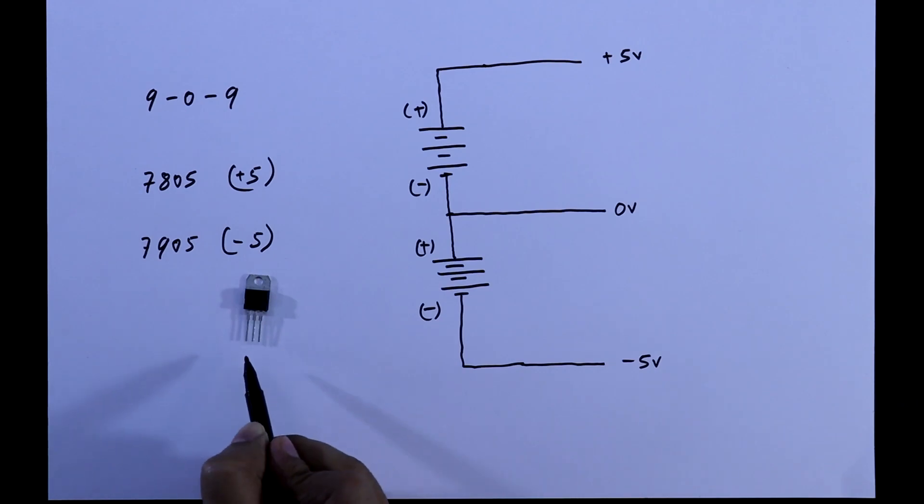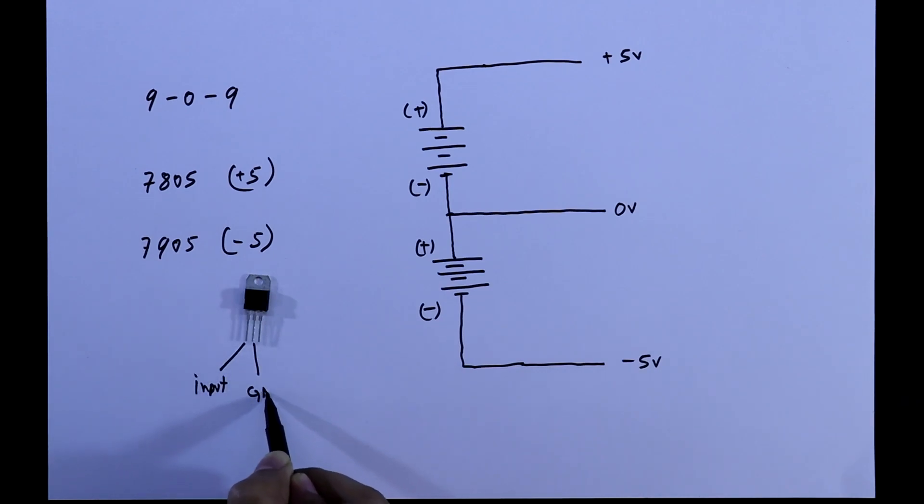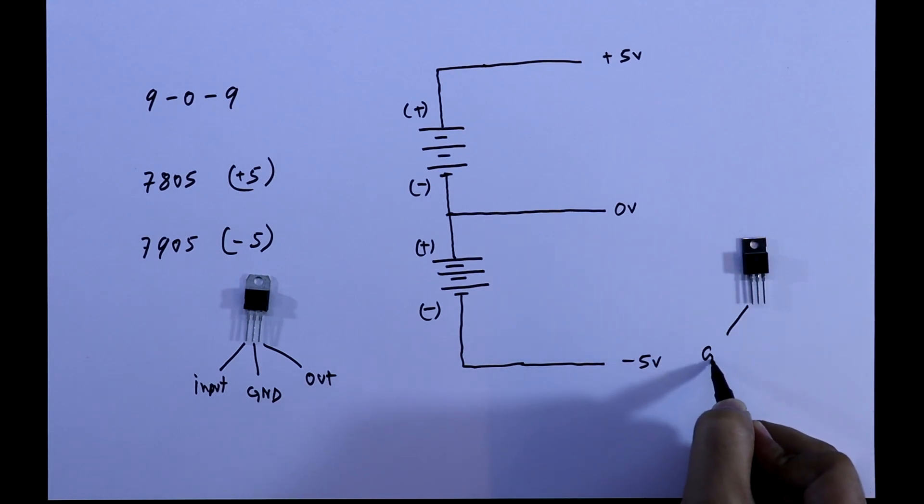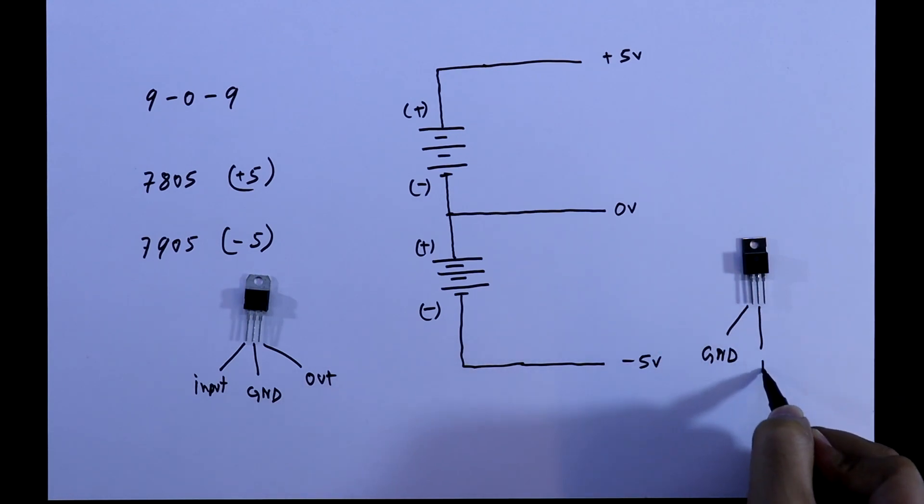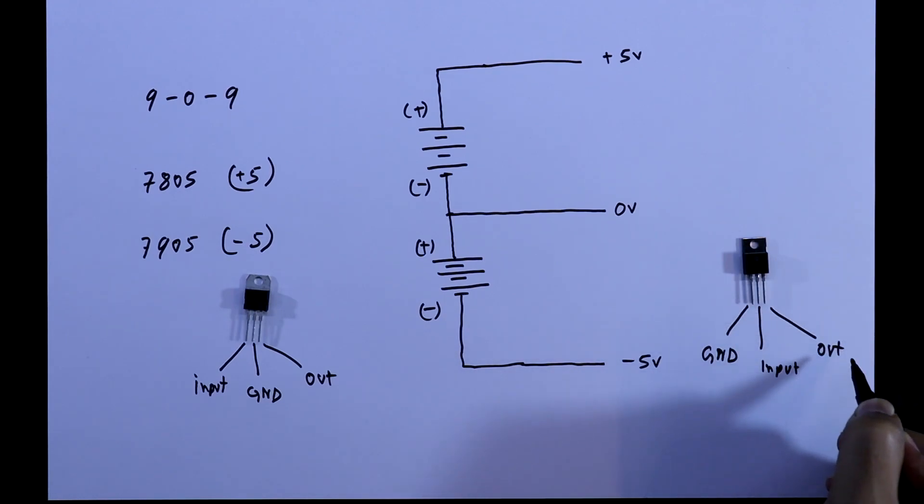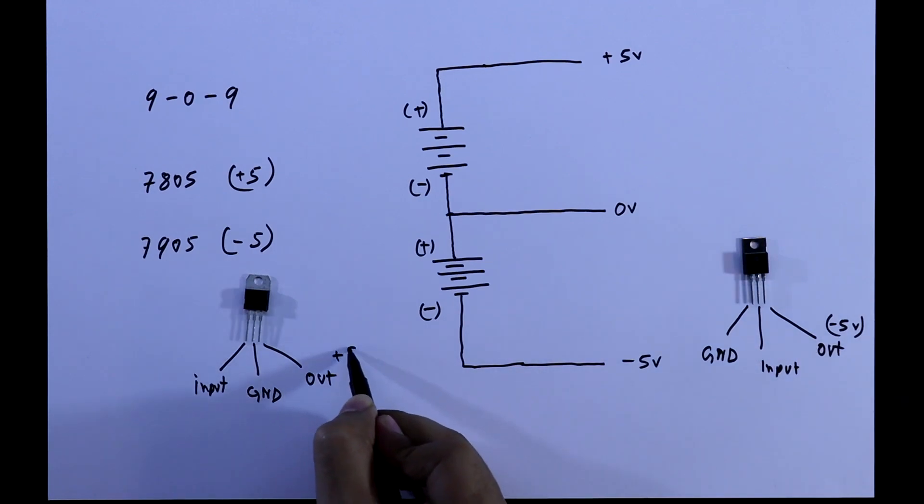This is 7805: the first pin is input, middle pin is ground, and the third pin is output. This is 7905: the first pin is ground, middle pin is input, and the third pin is output. From here we will get negative 5 volt.